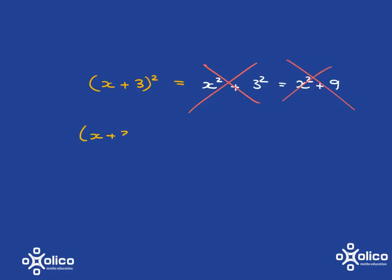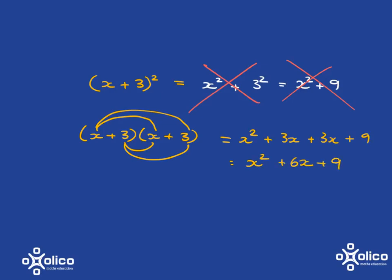Because what does x plus 3 squared mean? It's x plus 3 multiplied by x plus 3. And so we need to do it in the way that we always do. And we'll get x squared plus 3x plus another 3x plus 9, which is going to give me x squared plus 6x plus 9. So just watch it. Do not make this mistake. It's very easy to fall into that trap.